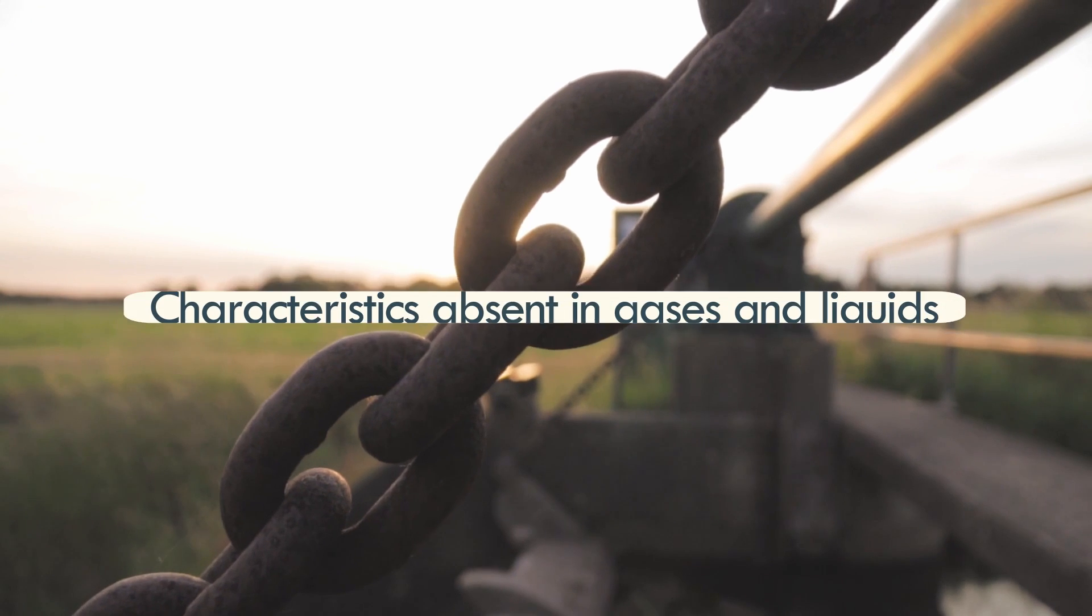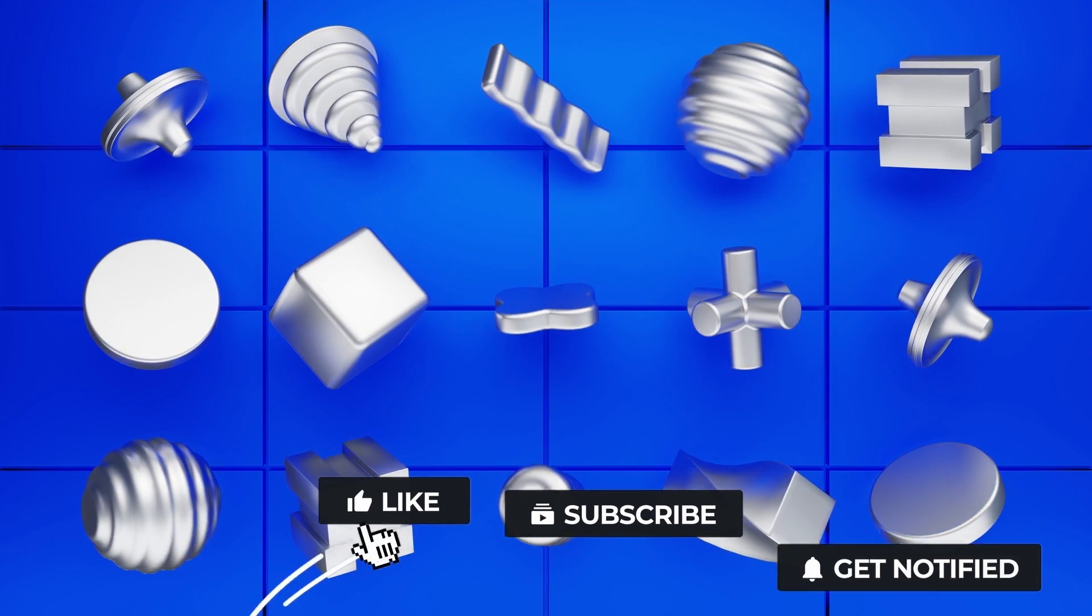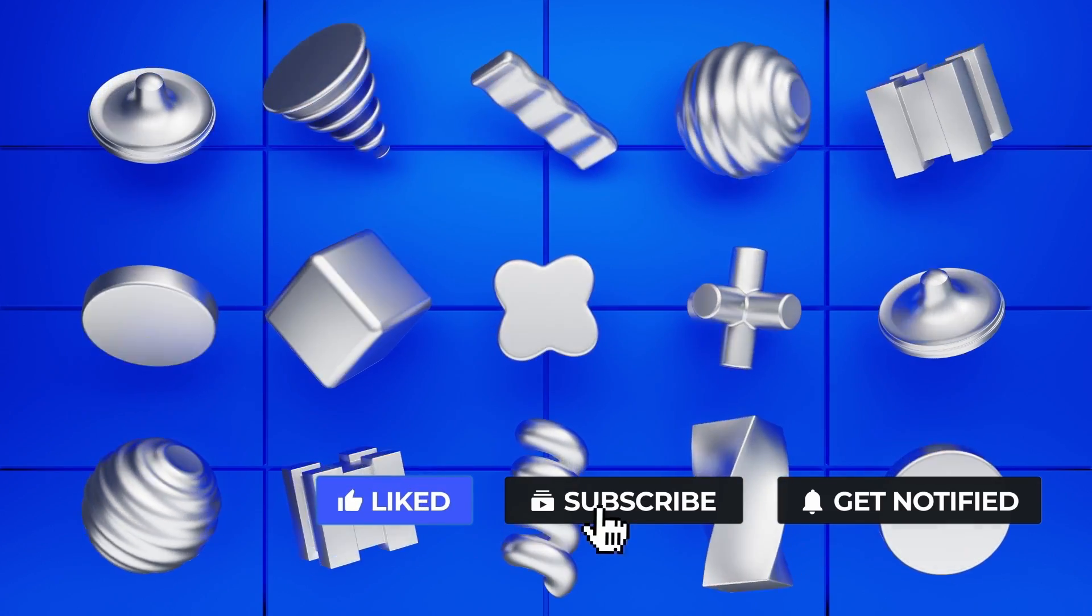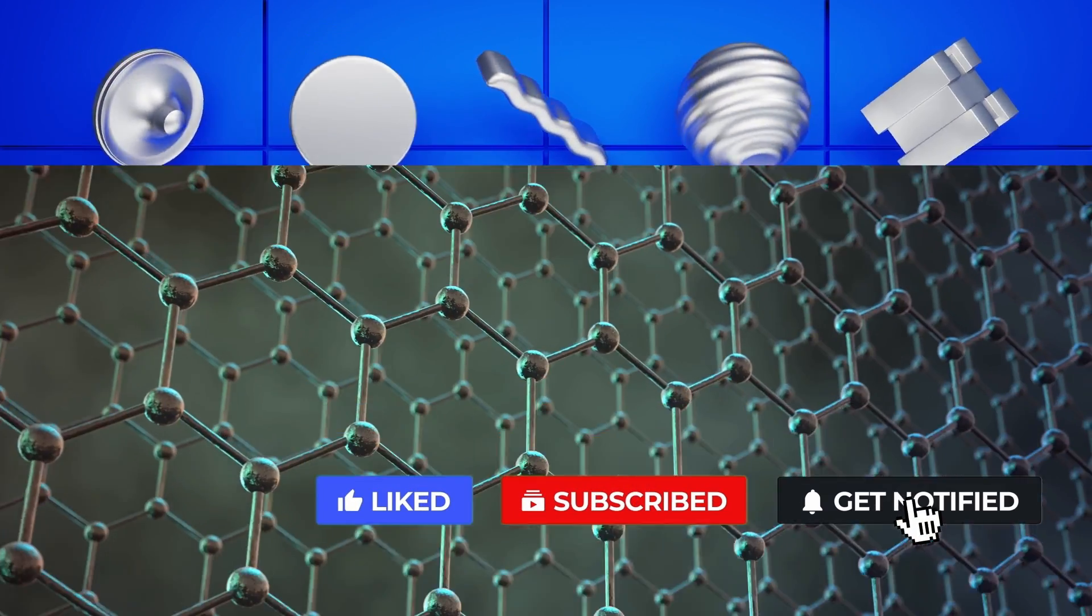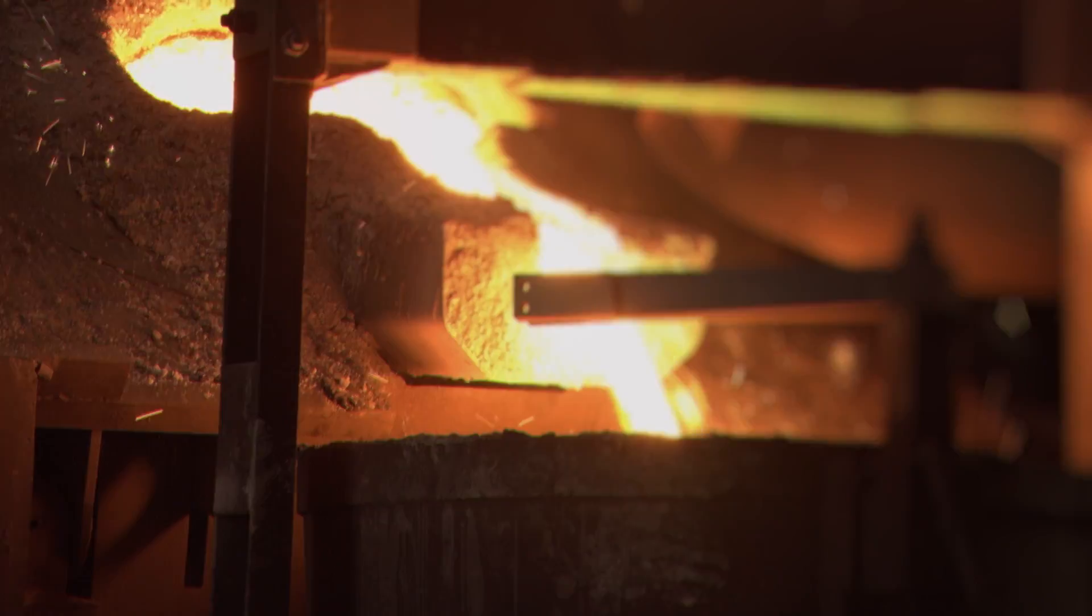Metals in their solid form have a fixed or set structure due to their atoms' close packing, which also contributes to their high melting points and explains why they don't exist in a liquid state at room temperature.